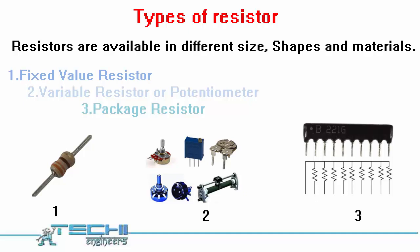Variable resistors or potentiometers are those types of resistors whose value can be changed during usage. These types of resistors usually contain a shaft which can be rotated or moved by hand or a screwdriver to change its value within a fixed range, for example, 0 ohms to 20 kilo-ohms.